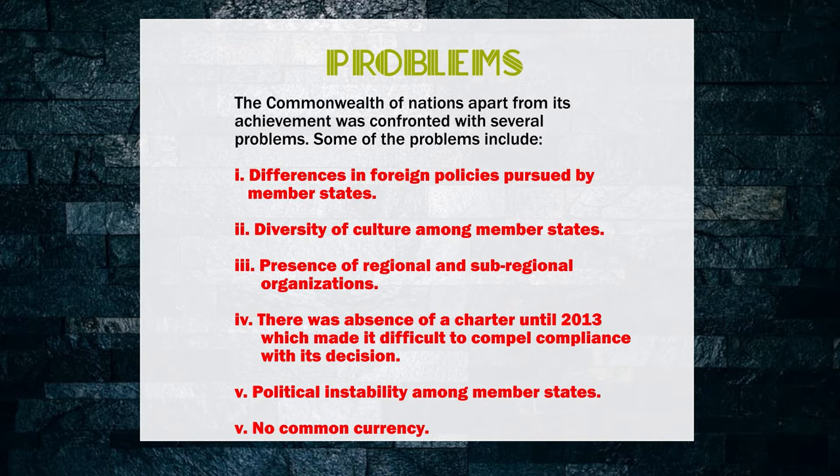The last problem of the Commonwealth is no common currency. The body was expected to have a common currency for member states, just like the common language is English. They were supposed to have a common currency so that they could actually integrate, buy things together, do things together, and it would have made the organization grow faster.